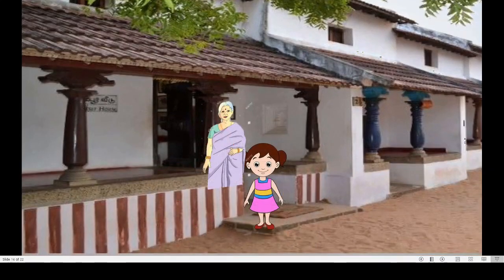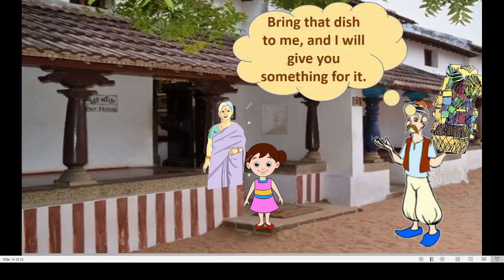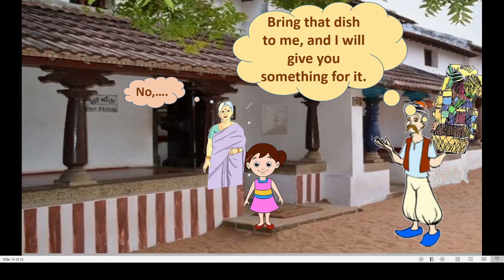After some time, the greedy merchant went back to the house where he had seen the golden dish and said, 'Bring that dish to me and I will give you something for it.' The grandmother said, 'No — you said the dish was worthless. But another honest merchant has paid a great price for it, so I gave it to him. You should not try to take advantage of the poor and needy people.' The greedy merchant paid the price for his dishonesty and greed. This is all about our story — The Two Merchants of Sari.